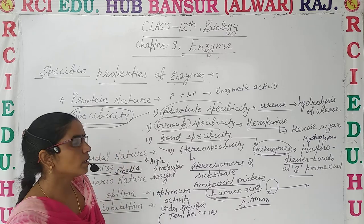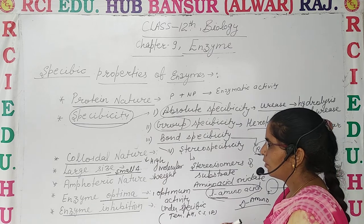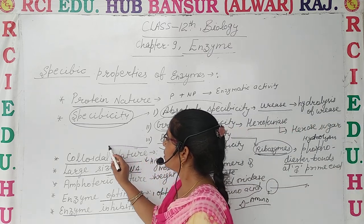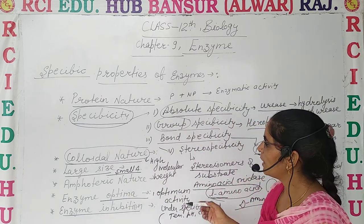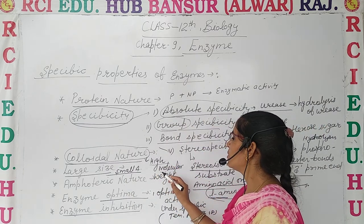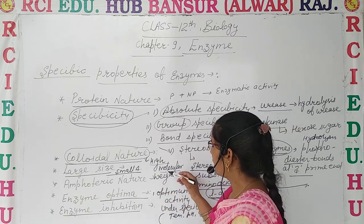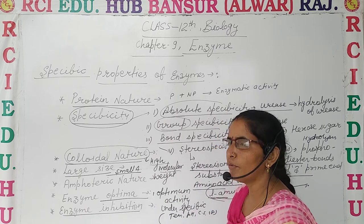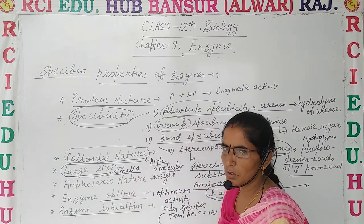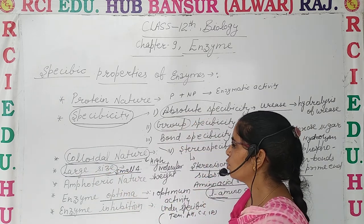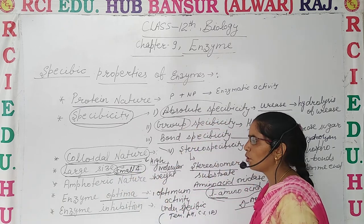The next property is colloidal nature. Enzymes have a high molecular weight, and due to their colloidal nature — since enzymes consist of protein — they have a high molecular weight, which provides a large surface area. Being larger in size, even a small amount of enzyme protein can catalyze a large number of reactions.